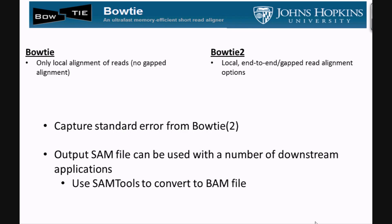This video has discussed how to use both Bowtie and Bowtie 2. Remember, the key difference is that Bowtie 2 can perform gapped alignments while Bowtie does not. As a last reminder, we strongly recommend that you capture the standard error whenever running Bowtie or Bowtie 2. The file that these aligners output is in the SAM format, and this file can be used with a number of downstream applications, but you should first use SAMtools to convert the SAM file to a BAM file.